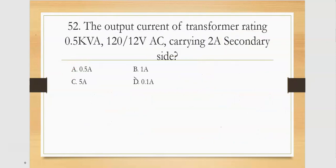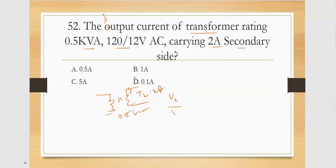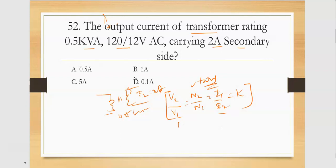Now coming to the transformer current problem. The transformer rating is 2.5 kVA, with 120 by 12 volts, and carrying 2 amps on the secondary side. So the secondary current I2 is 2 amps. The transformer formula is: V2/V1 = N2/N1 = I1/I2 = K, the transformation constant.